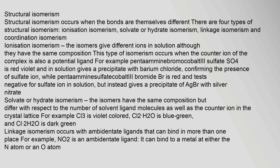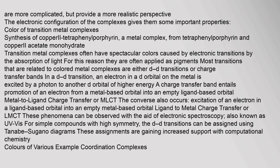Structural isomerism occurs when the bonds are themselves different. There are four types of structural isomerism: ionization isomerism, solvate or hydrate isomerism, linkage isomerism, and coordination isomerism. The electronic configuration of the complexes gives them some important properties. Transition metal complexes often have spectacular colors caused by electronic transitions by the absorption of light, and for this reason they are often applied as pigments. Most transitions related to colored metal complexes are either d-d transitions or charge transfer bands.